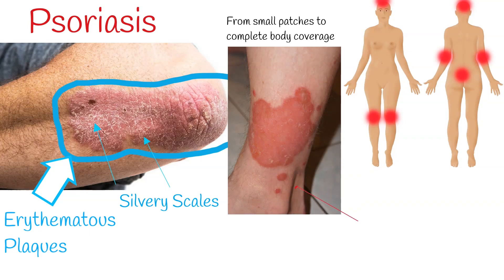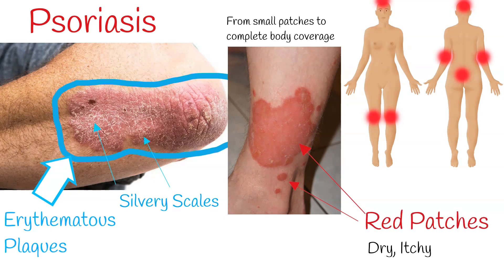A psoriatic plaque is a well-circumscribed area differing from the surrounding surface, which is called a patch. These patches are red or purple with white scales on top — dry, itchy, and scaly.